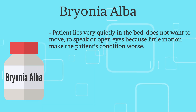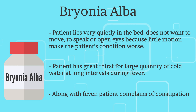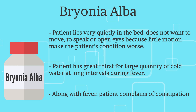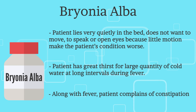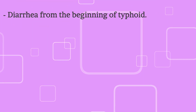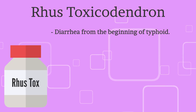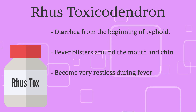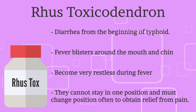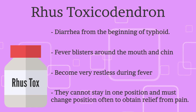Also, if during typhoid fever the patient has great thirst for large quantities of cold water at long intervals, and the patient also complains of constipation, then Bryonia Alba can give good results. Just as Bryonia can be given if there is constipation during typhoid, similarly, if the patient has diarrhea from the beginning of typhoid, then a medicine named Rhus Tox gives a good result. Many patients get fever blisters around the mouth and chin and become very restless during fever. They cannot stay in one position and must change position often to obtain relief from pain — if there is such a situation, Rhus Tox can also be used.